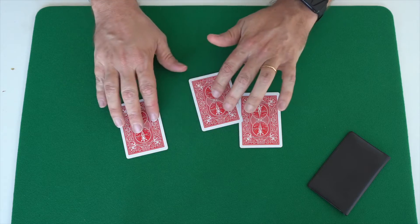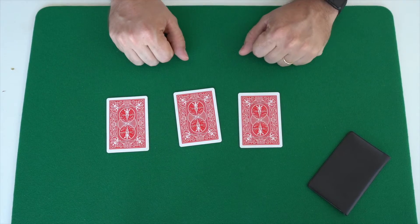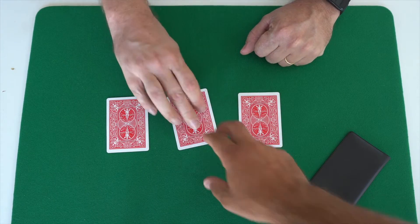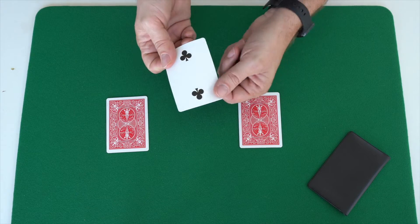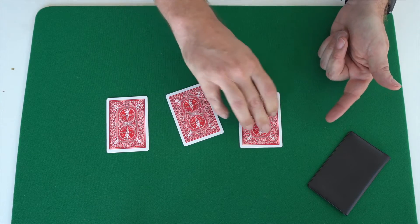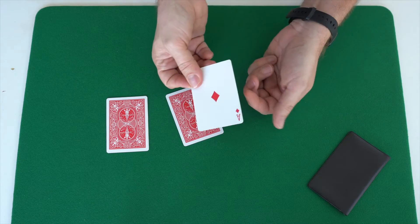But to make it more difficult I'll switch them around like this. Here. Sorry, it's not here because it jumped right over here and here's the other losing card.